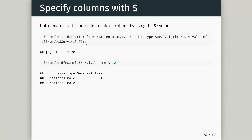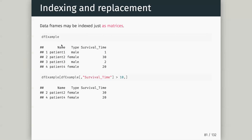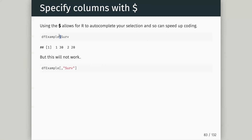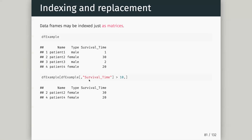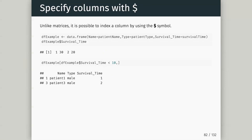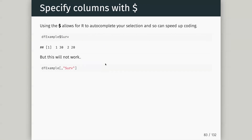A nice feature of data frames is that we don't need to use square brackets — we can pull out a column using the dollar sign. It's the name of your data frame, then dollar sign, then the name of the column. Similarly, instead of square brackets with a comma and the column name, I can just do dollar and the column name to get the same result.